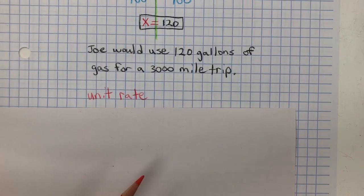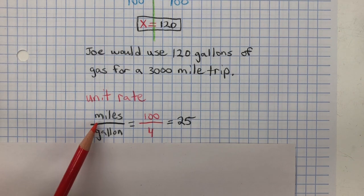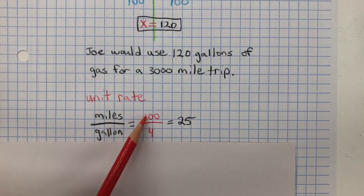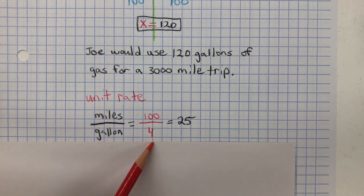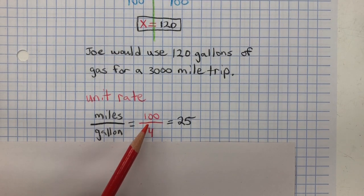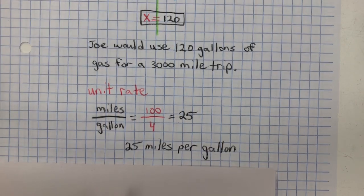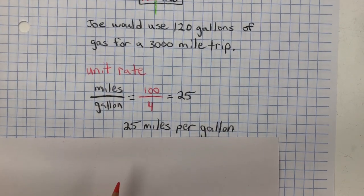Now to find the unit rate, you just take the miles to gallons. 100 miles for 4 gallons. Divide that and you get 25. So 25 miles per gallon.